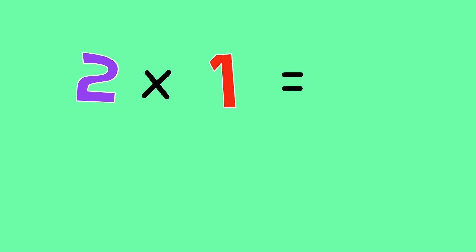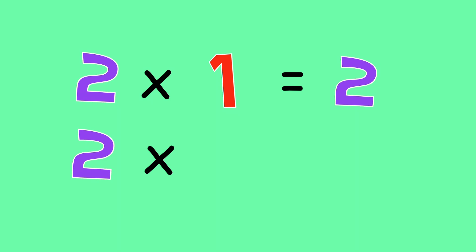What does 2 times 1 equal? You got it! 2. 2 times 1 equals 2.